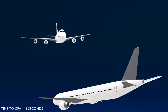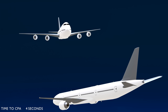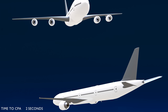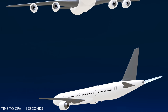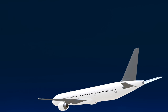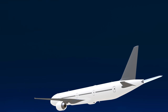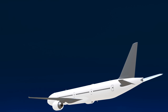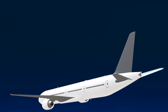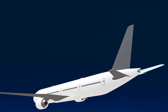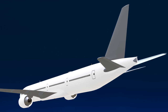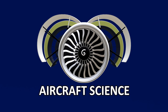The TCAS computer on the traffic aircraft is coordinated to give an opposite direction command, clearing up the conflict. When it comes to a possible mid-air collision, TCAS may be the last line of defense, but a very effective one.